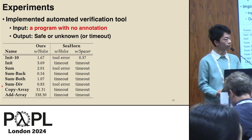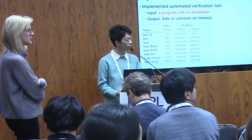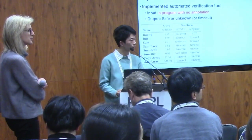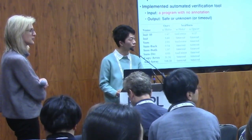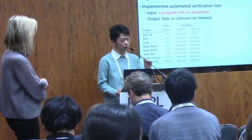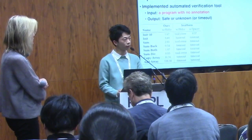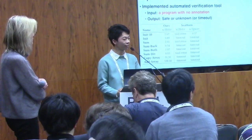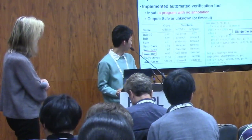Thanks for the very good talk. I was curious — do you have any examples where you separate the ownership and then put it back together? For example, like in a quicksort function where you divide into two arrays, sort, and then put them back together. Can you handle a sort function?